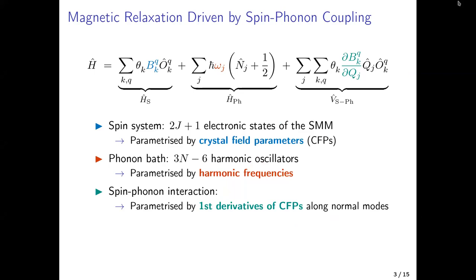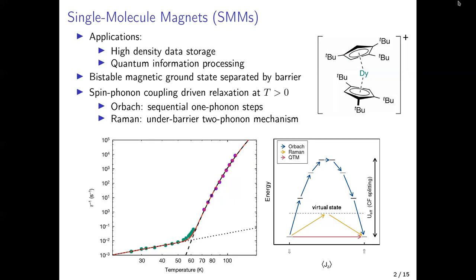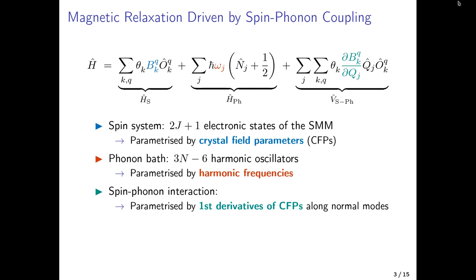A quick overview of how we calculate spin relaxation: we partition the Hamiltonian, which is quite common in the field of electronic coupling. In our case, we describe the electron spin states with a crystal field Hamiltonian that splits the states as shown. Then we have the vibrations parameterized by harmonic frequencies, and lastly an interaction Hamiltonian between the bath and the spin system parameterized by crystal field parameter derivatives — basically the first-order Taylor expansion of the electronic state Hamiltonian with respect to those crystal field parameters.